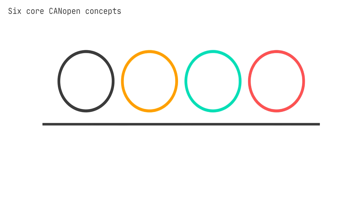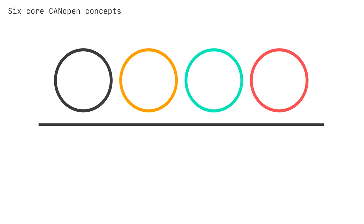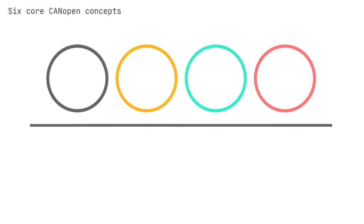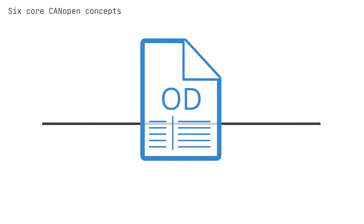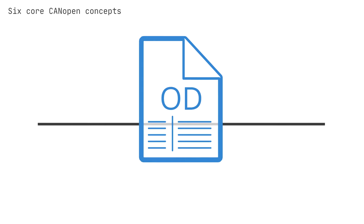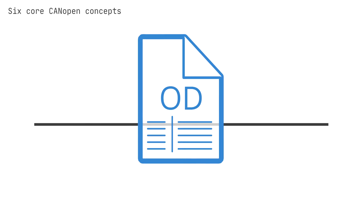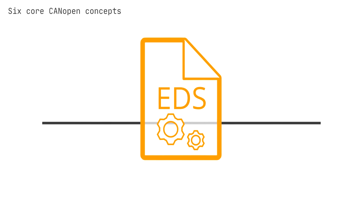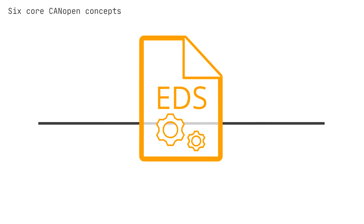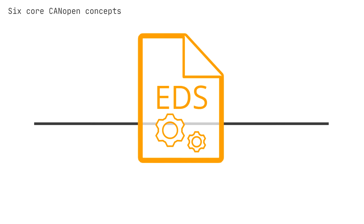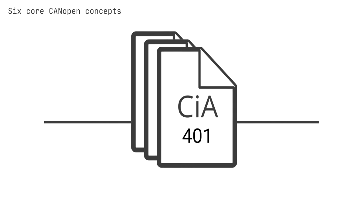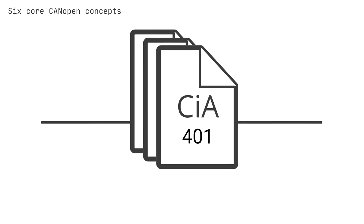Number three: device states — a device supports different states, and a master node can change the state of a slave node, for example resetting it. Number four: object dictionary — each device has an OD with entries that specify, for example, the device config, and it can be accessed via SDOs. Number five: electronic datasheet — the EDS is a standard file format for OD entries, allowing service tools to update devices. Number six: device profiles — standards describe, for example, IO modules (CiA 401) and motion control (CiA 402), for vendor independence.